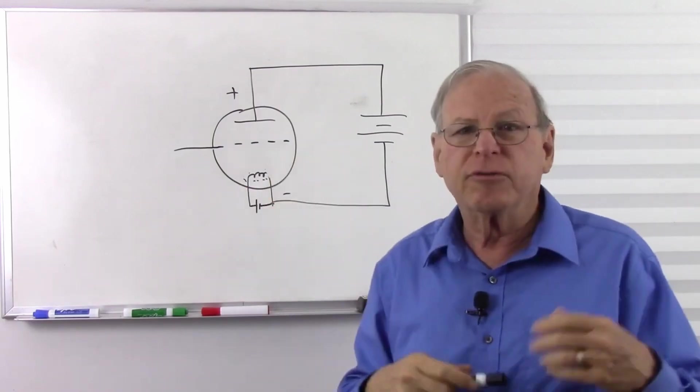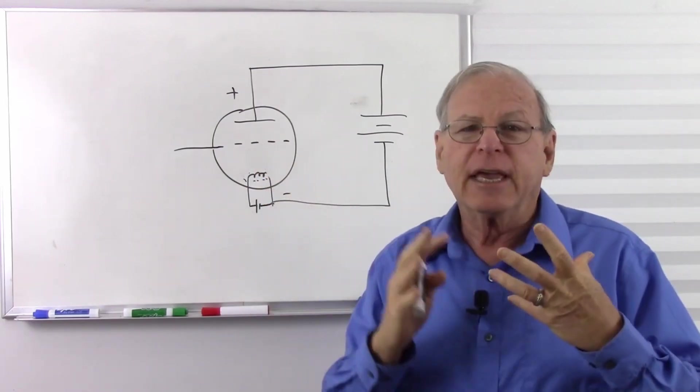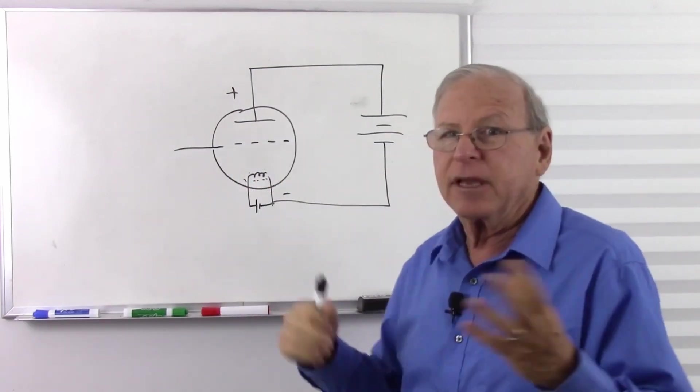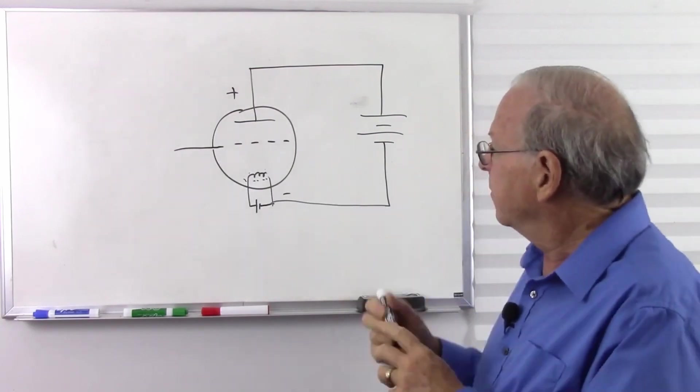More sophisticated tubes, such as tetrodes and pentodes, have more grids to give better control of the electron flow. We'll just look at the triode, because that's the simplest type of vacuum tube that can amplify.